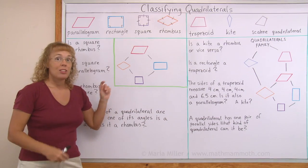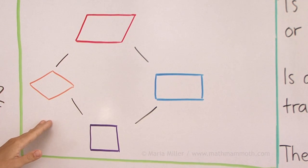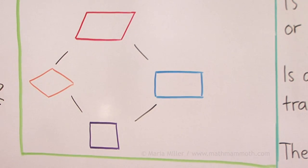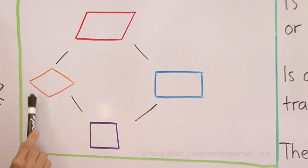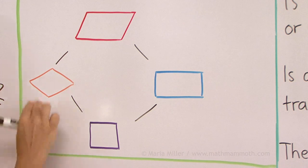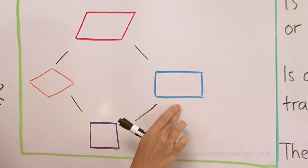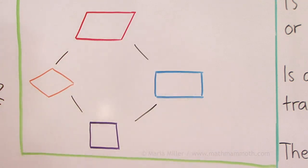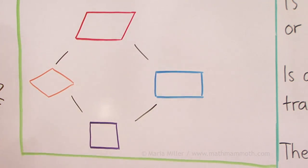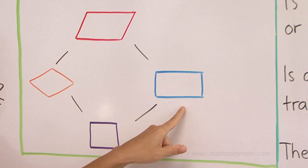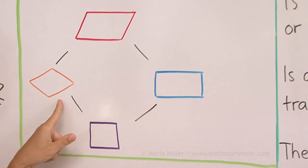I have organized those four types of quadrilaterals in a tree diagram — basically like a family tree for quadrilaterals. Here we have the parallelogram. The rhombus is like a child of the parallelogram, or it belongs to the parallelogram family. Also, the rectangle belongs to the parallelogram family. And then the square belongs to the rectangle family. In other words, a rectangle is also a parallelogram, and a square is also a rectangle, and a square is also a rhombus.